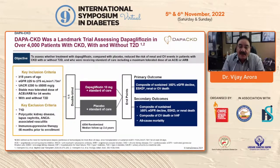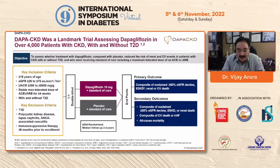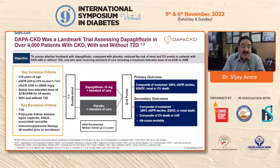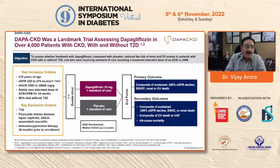The evidence with dapagliflozin in the holistic management of CKD of all causes and etiology: DAPA-CKD was a landmark trial assessing dapagliflozin in over 4,300 patients with CKD with or without type 2 diabetes. The objective was to assess whether dapagliflozin compared with placebo reduces the risk of renal and cardiovascular events in CKD patients receiving standard of care including maximum tolerated dose of ACE inhibitors or ARBs. Key inclusion criteria: age ≥18 years, eGFR between 25 and 75, UACR between 200 and 5,000, and stable maximum tolerated ACE/ARB dose for more than 4 weeks, with or without type 2 diabetes.